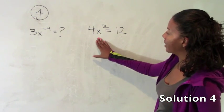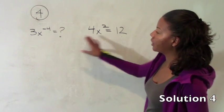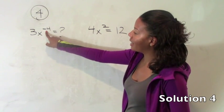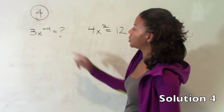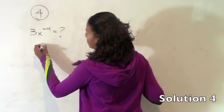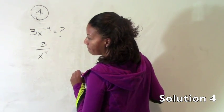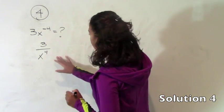So we can solve for x and then plug that value in over here. So the first thing I'm going to do though is rewrite this because I don't like working with that negative exponent. So 3x raised to the negative 4th is simply 3 divided by x to the 4th.